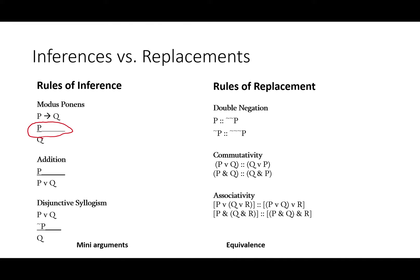As these are mini arguments, the bar that you see in rules of inference means therefore. The double colon means that the thing on the left is logically equivalent to the thing on the right.